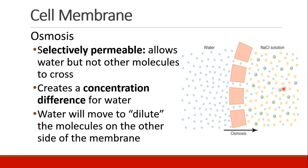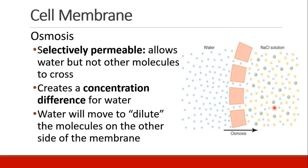Osmosis is a process by which molecules move across a semi-permeable membrane. The membrane is selectively permeable because it allows water to cross, but not other molecules. So we get a concentration difference for water — on one side we have a sodium chloride solution in water, and on the other side we just have water. Since this membrane only allows water but not sodium chloride to cross, water will start to move from the left side to the right side in order to dilute the sodium chloride so the concentration on both sides will be as close to equal as possible.